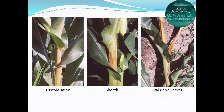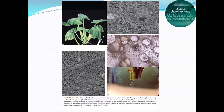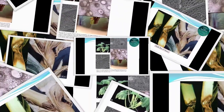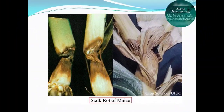Now we will see the symptoms of this bacterial stalk rot caused by Erwinia dissolvens. The basal internodes develop soft rot and give a water-soaked appearance, as you can see in the images. A mild sweet fermenting odor also occurs at the time of infection, caused due to rotting of the inner portion of the stalk. That is why it is called stalk rot of maize.